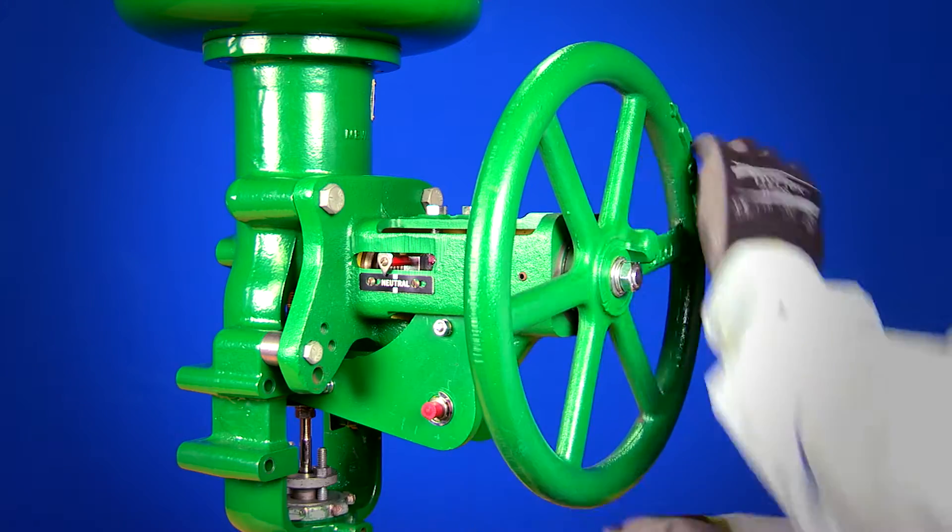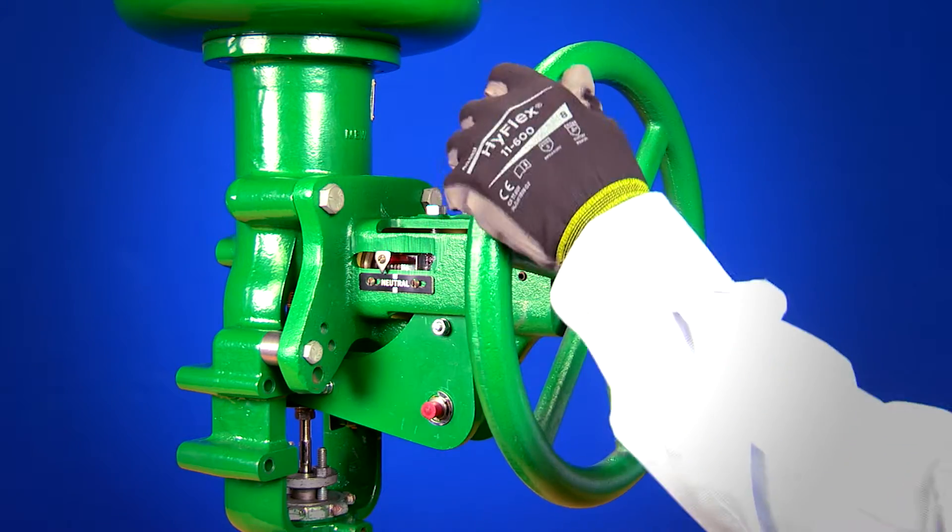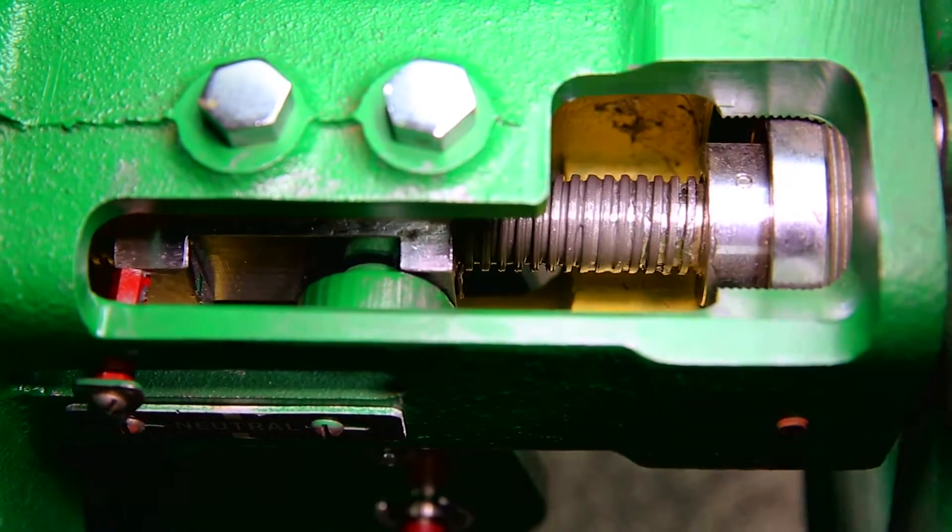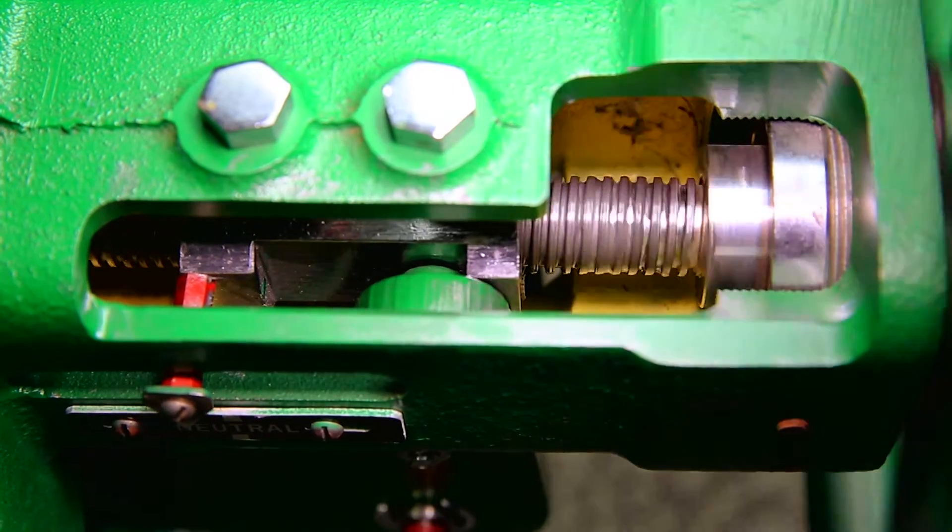The side-mounted handwheel pushes against the force of the actuator spring to move the valve in one direction, and the actuator spring moves the valve in the other direction.